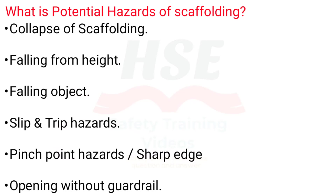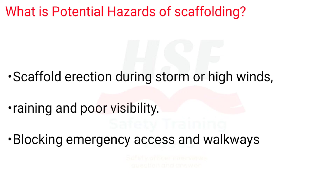What are the potential hazards of scaffolding? Collapse of scaffolding, falling from height, falling objects, slip and trip hazards, pinch point hazards, sharp edges, openings without guard rails, scaffold erection during storms or high winds, raining and poor visibility, and blocking emergency access and walkways.